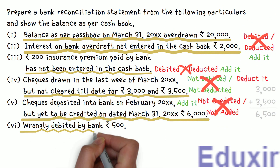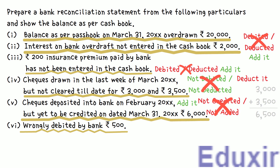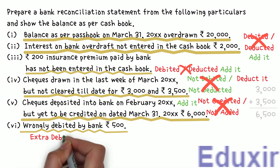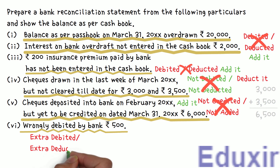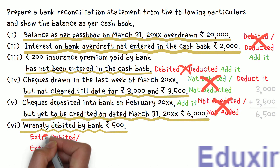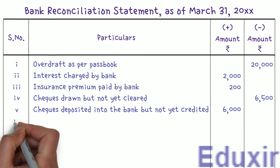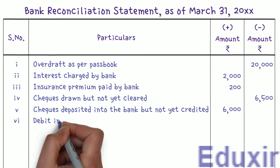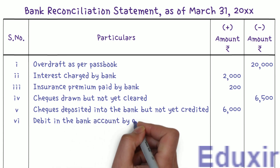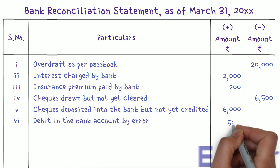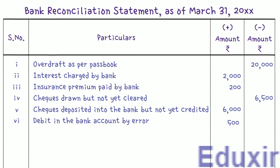In this case, the bank has wrongly debited ₹500 in the passbook. As this is an error committed by the bank, this entry will not be there in the business cashbook, but the amount is debited in the bank passbook. So we need to add this amount to the passbook balance to get the cashbook balance. We record 'Debit in the bank account by error' and enter ₹500 in the plus amount column.